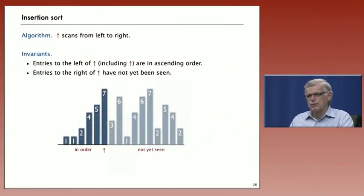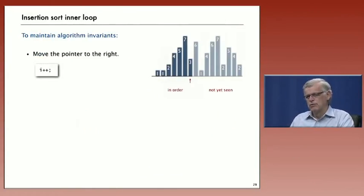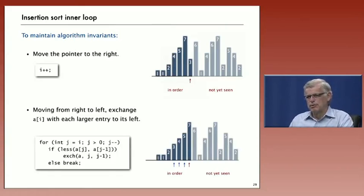So we have to look at the code that's going to maintain that invariant as the pointer increments. Move the pointer to the right, it's incremented again. Now the invariant's broken because the element on the pointer is not in sorted order. To put it in sorted order, we have to move from right to left, exchanging it with every larger element to its left. And that's what the code at the bottom does.